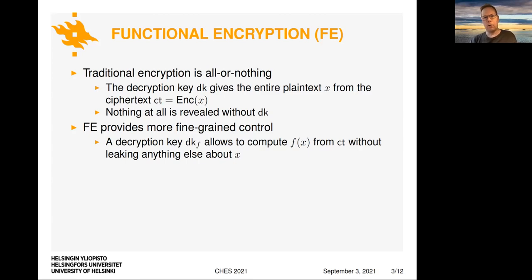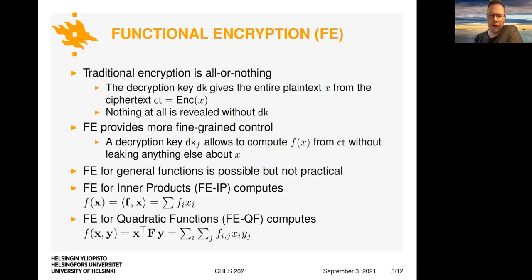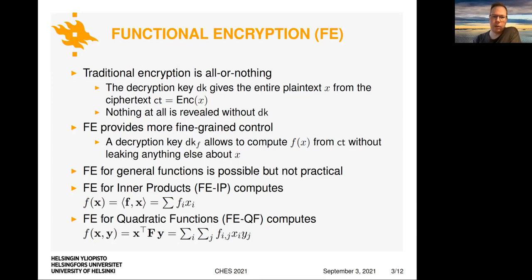So then the question is, of course, how or what kind of functions can we compute? In general, general functions are possible in theory, but not in practice. So in a practical sense, we are limited to very basic functions. There is functional encryption for inner products, and those schemes allow you to compute inner products, like means or weighted averages, or very basic statistics over a vector of data. Functional encryption for quadratic functions lets you compute already quadratic functions, and can lead to much more powerful practical applications. The focus of this work is FEQF. And as we will show, we can actually do some simple machine learning tasks even with these kinds of schemes.